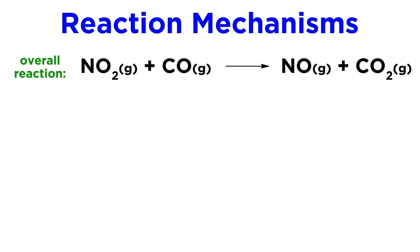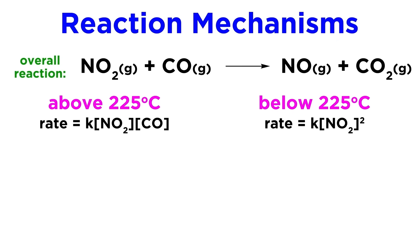For example, when nitrogen dioxide and carbon monoxide react to form carbon dioxide and nitrogen monoxide, the rate law is found to be first-order in each reactant when the temperature is above 225 degrees. However, at lower temperatures, the rate law shows a second-order reaction with respect to NO2, and zero-order in CO. This is not consistent with a single-step bimolecular reaction, as is shown in the overall chemical reaction.